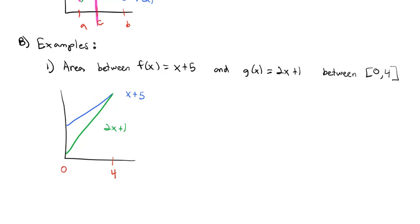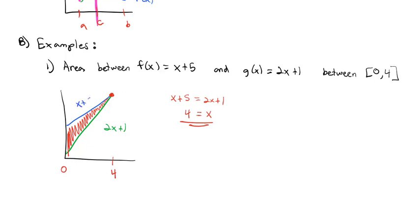We're interested in going from 0 to 4. Do they actually intersect at 4? We can figure out where these intersect by setting x plus 5 equal to 2x plus 1. Subtracting x and subtracting 1, we find x equals 4 is where they intersect. So we're really finding the area of this triangle between our two graphs, with the blue graph x plus 5 on top.